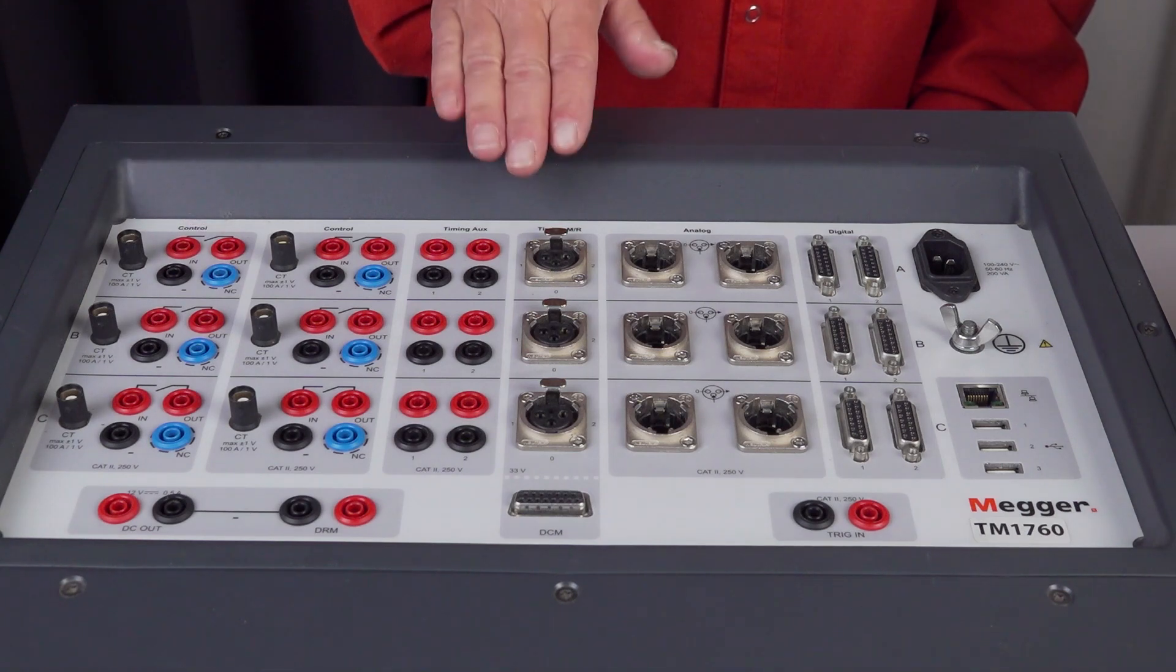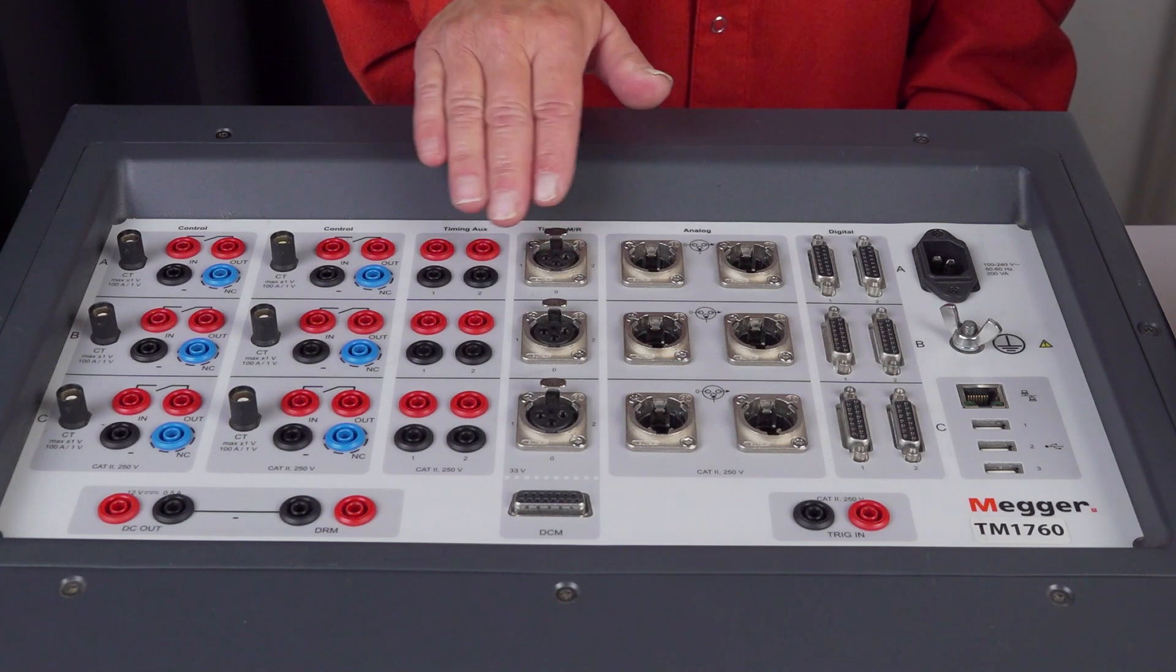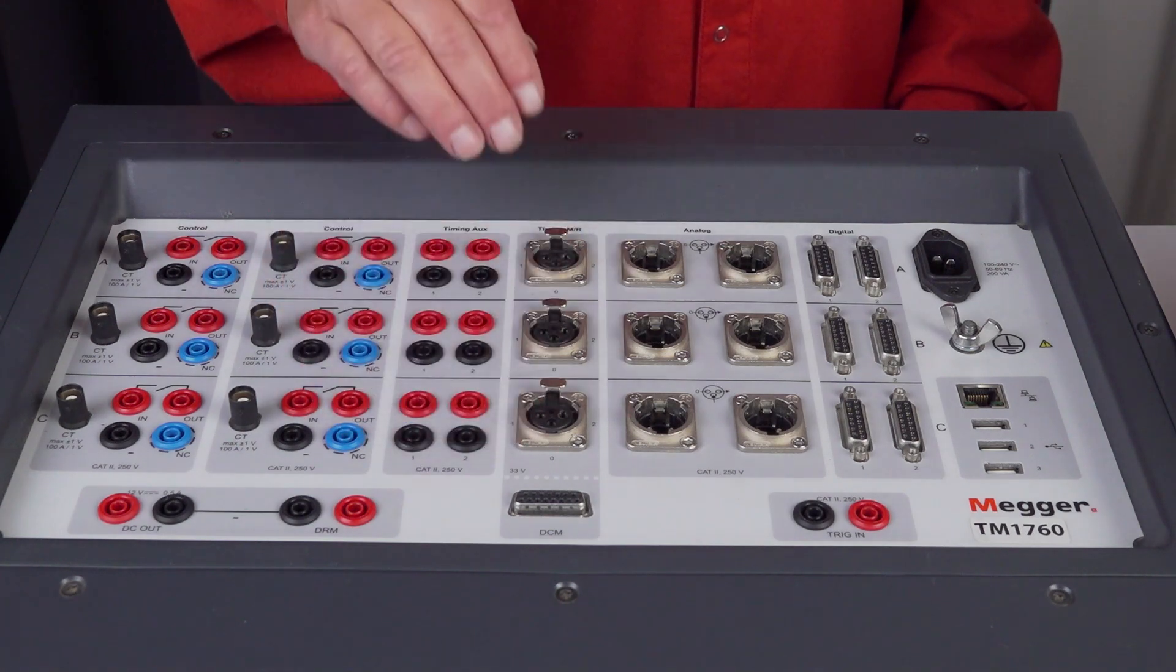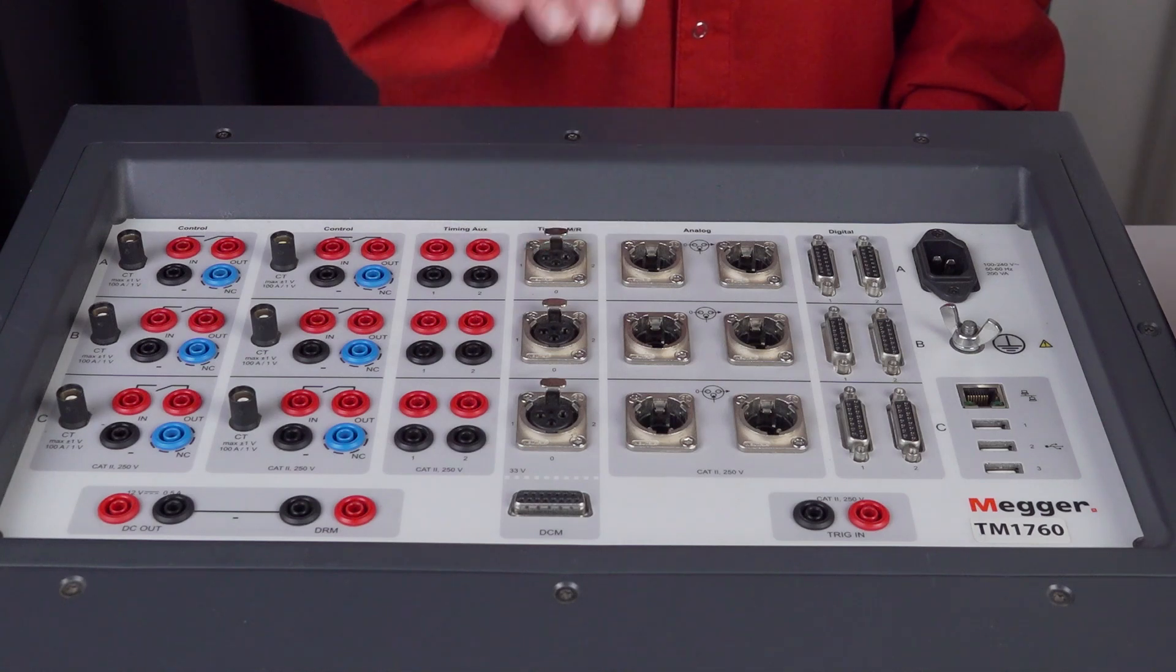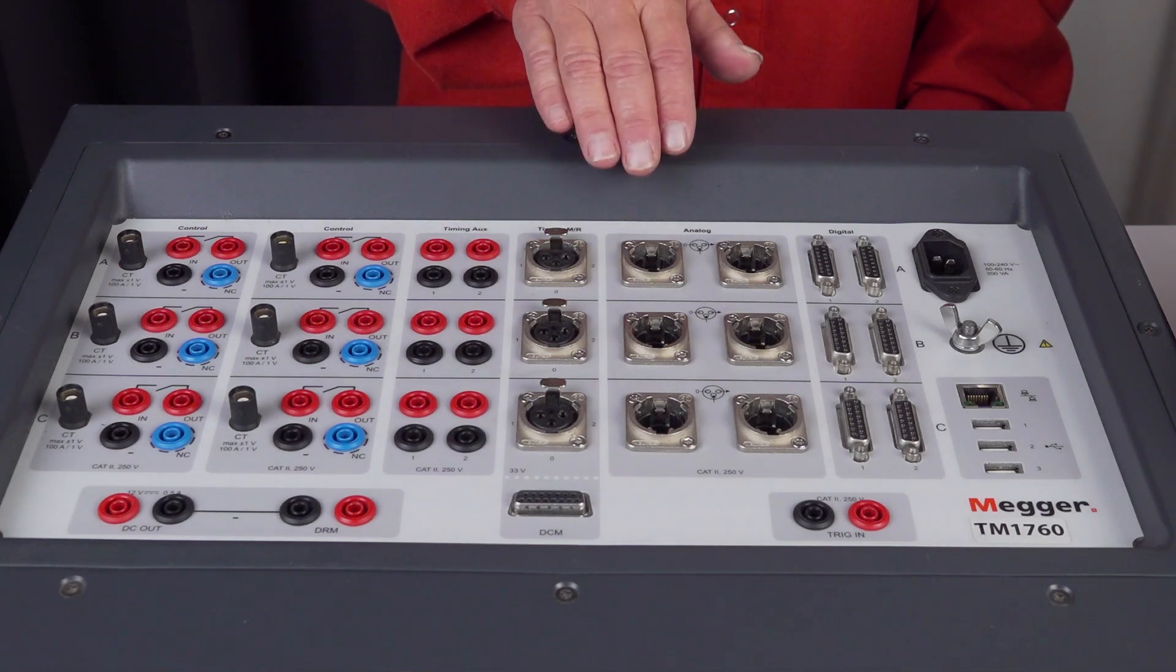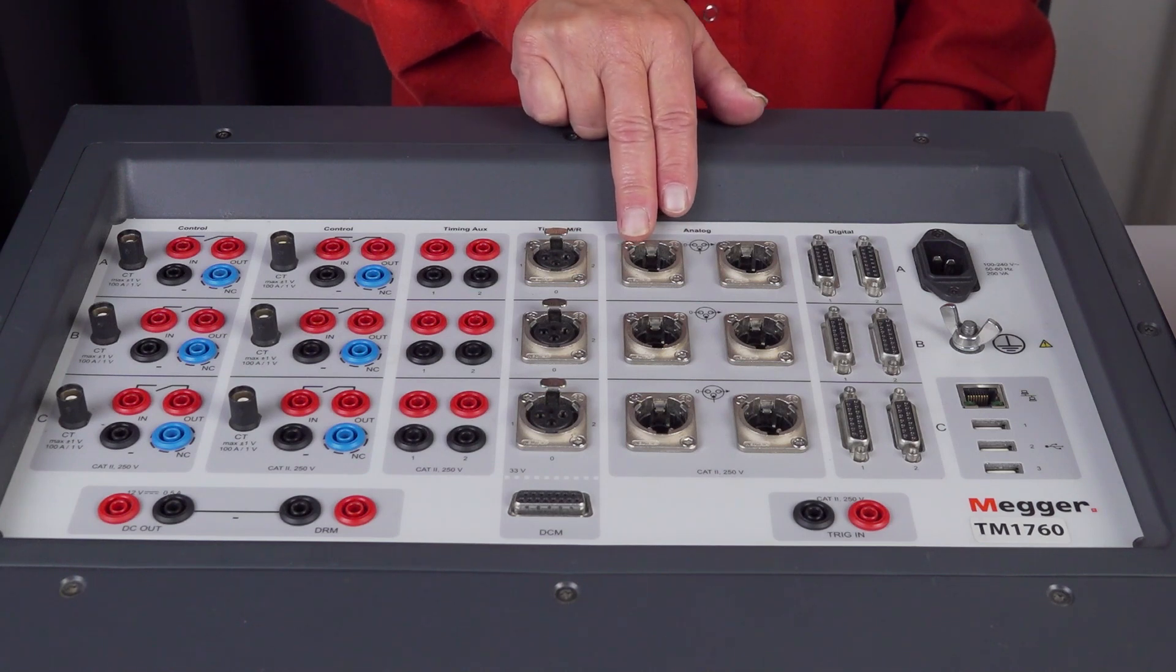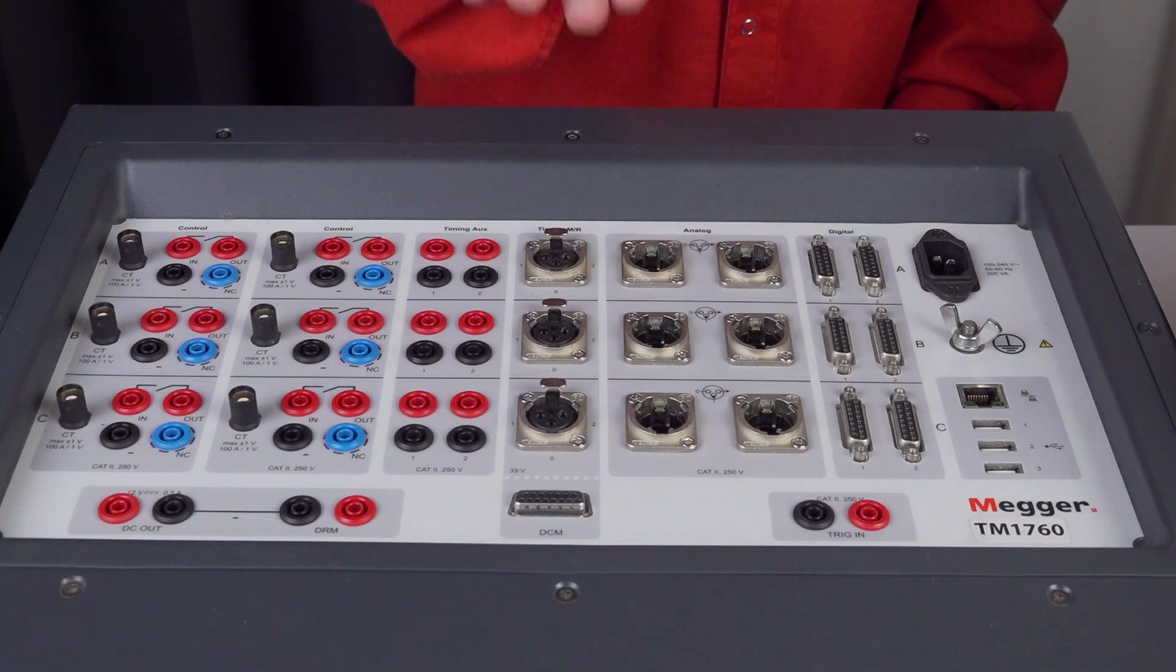We are going to measure timing as I mentioned with the timing channel. We're only going to use three channels. This instrument has six and we're going to measure analog motion and we're going to use the analog channel which is flexible also for other analog measurements and this instrument has six channels but we're only going to use one.